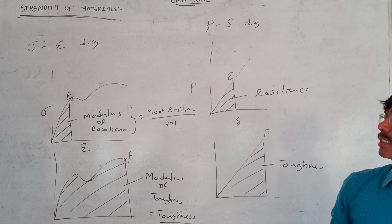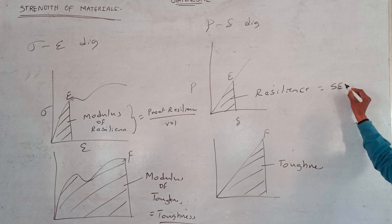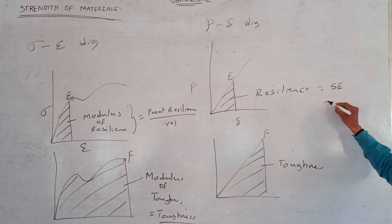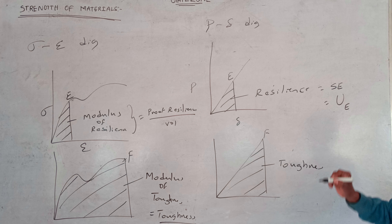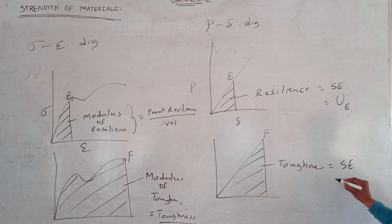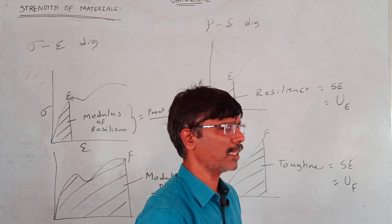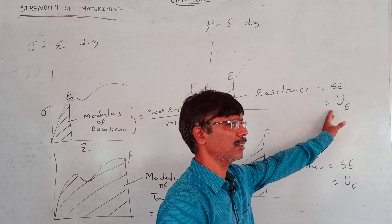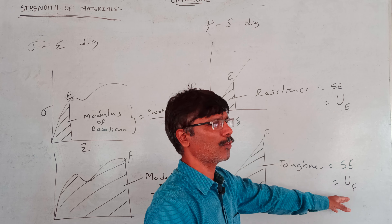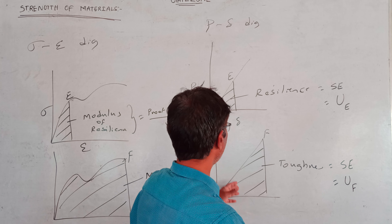Resilience is the strain energy stored in a body up to the elastic limit. Strain energy stored in a body up to the elastic limit when it is loaded — this is resilience. Strain energy stored in a body up to the fracture point is toughness.